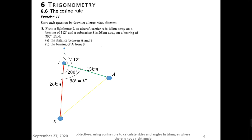The opposite side to angle L is the unknown side, called L small. If we name the angle at A as A capital, the opposite side to it is the red side equal to 26 kilometers — that is A small. And if we name the angle at S as S capital, the opposite side to angle S is 15 kilometers — that is S small. As you can see, the green side of 15 km and the red side of 26 km are known, and the angle in between, which is 88 degrees, is known as well.